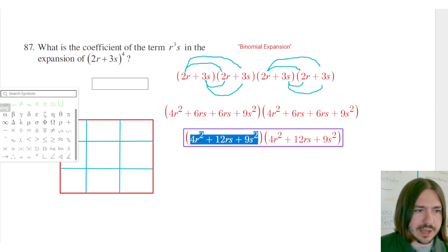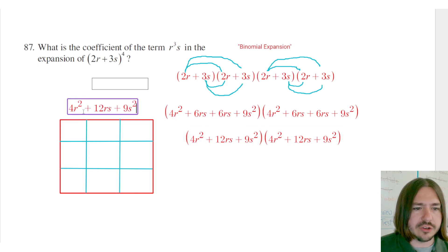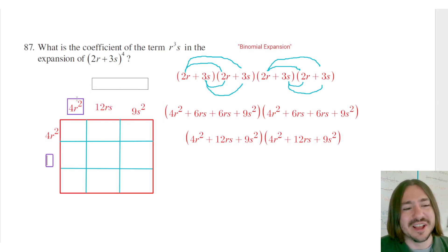And I'm going to multiply each term in the first term. Well, let's just do it like this. So 4r squared plus 12rs plus 9s squared. Okay, and I'm going to multiply that by itself. So I'm going to write the terms along the top row and down the first column.